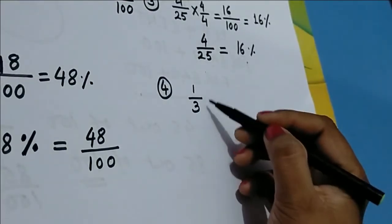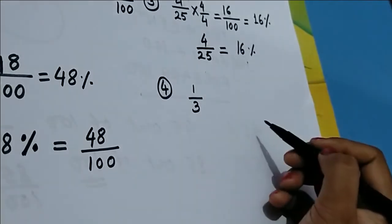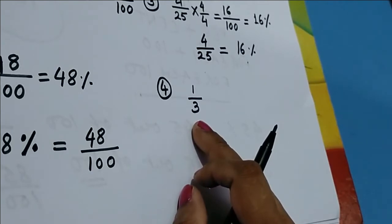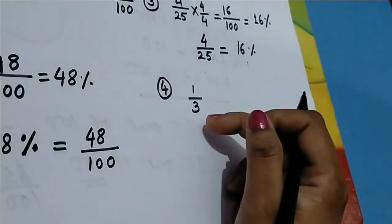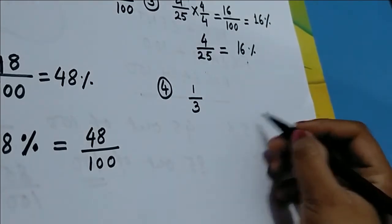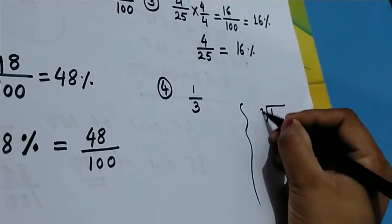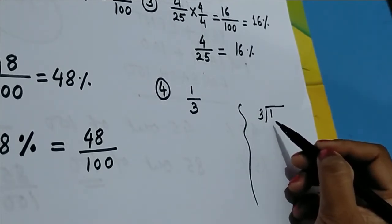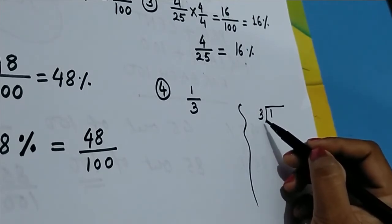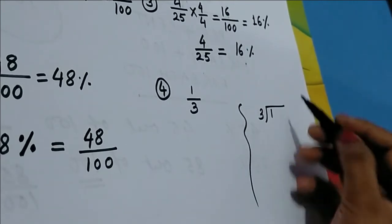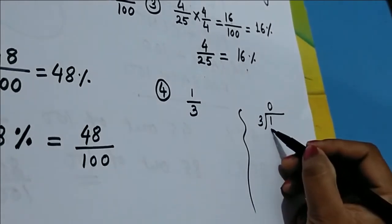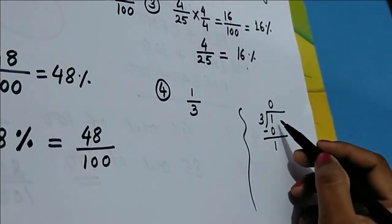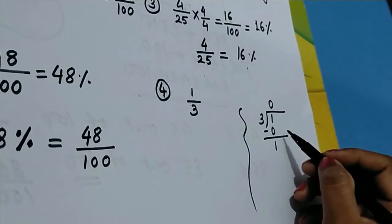Let's take another example: 1/3. We need to convert 1/3 into percentage. In this case, there is no whole number by which we can multiply 3 to get 100. So we need to divide 1 by 3 using long division. We have 1 as dividend and 3 as divisor. Since 1 does not appear in the table of 3, we get 0 remainder 1.